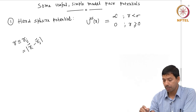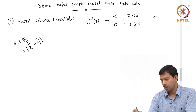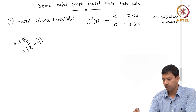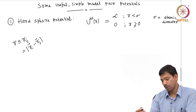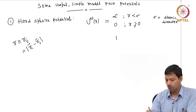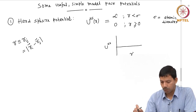What it tells us is that if the inter-particle distance is less than sigma — where sigma is the atomic diameter — then the potential is infinity, and when r is greater than sigma the potential is 0. If you draw u hard sphere versus r, how will the potential look?